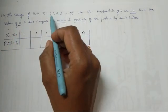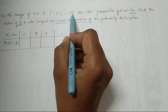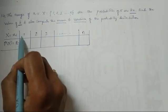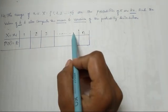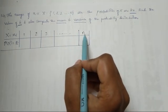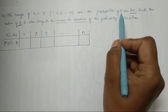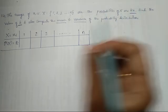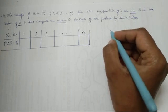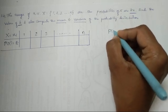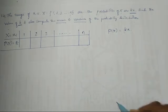What are the values of x they are telling? It is 1, 2, 3 so on up to n. So I have taken the same values 1, 2, 3 so on up to n. And the probability distribution for x is kx.